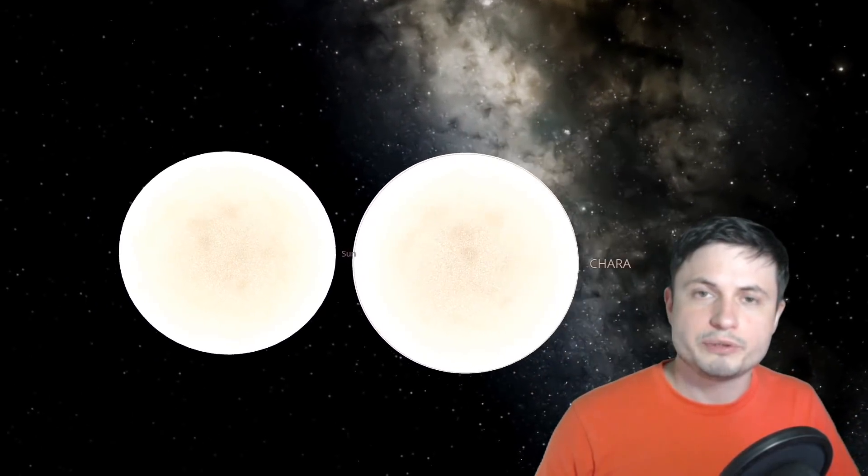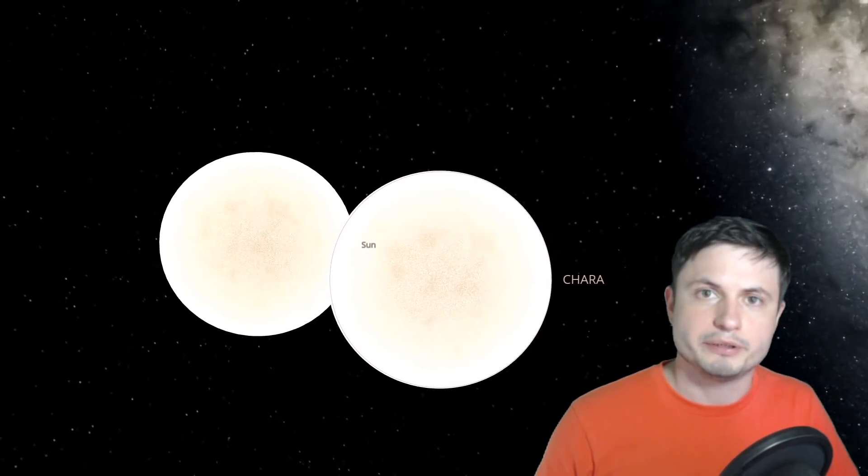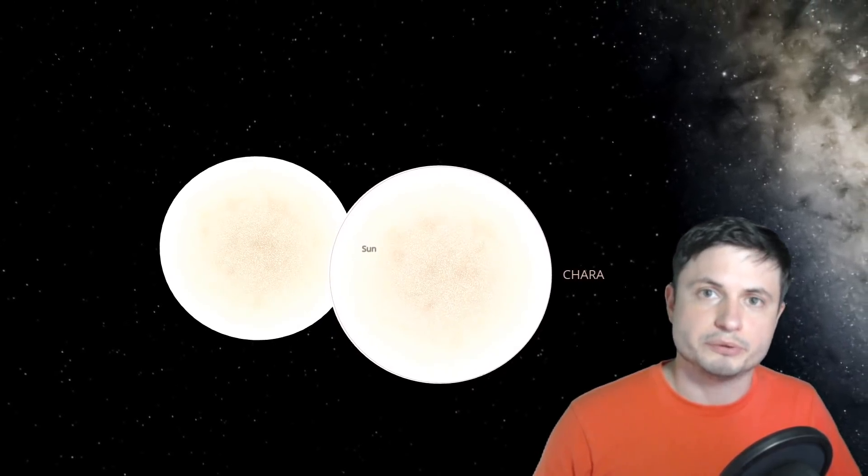But the only problem is that as of today, as of 2020, we haven't really discovered any planets around it. And the reason is very simple. These planets are probably just orbiting in a different way from where we usually look at planets. In other words, they don't really block the starlight from the star itself so we can't really see them.